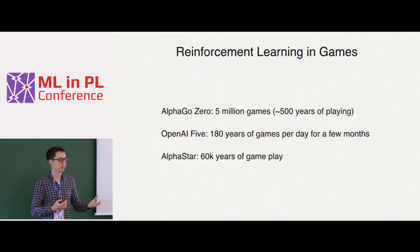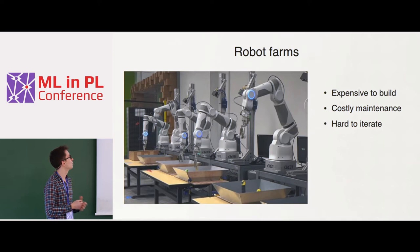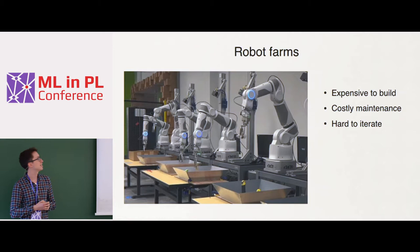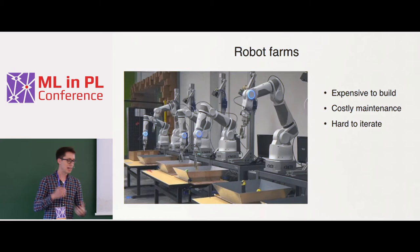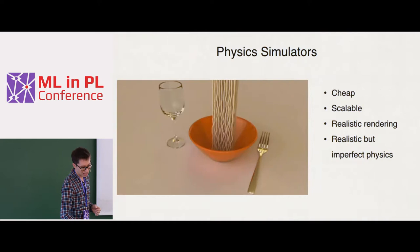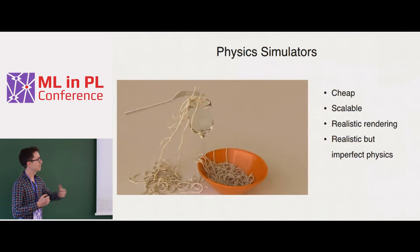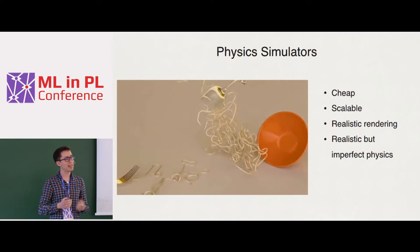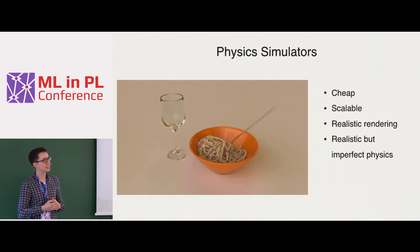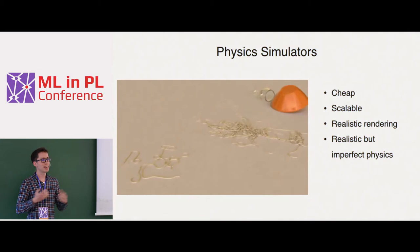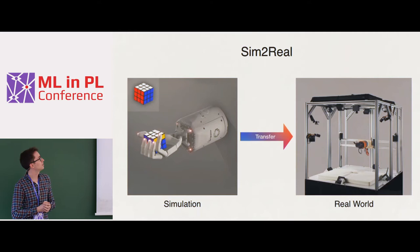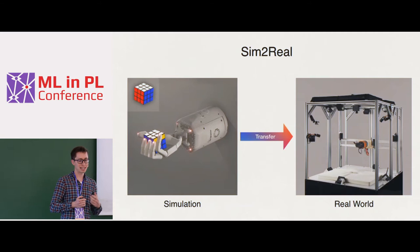Gathering this amount of experience on a physical robot would simply be infeasible. One potential solution is to parallelize data gathering using a farm of robots — as seen in work from Google Brain — but robot farms are expensive to build and maintain, and it's hard to iterate on new problems in that setup. An alternative is to train control policies in a physics simulator, which is much cheaper and more scalable. Nowadays we have realistic rendering, but physics simulators — often designed for the game industry — are based on different laws than real-world physics and are not very accurate. This approach of training in simulation and deploying in the real world is called Sim2Real, and that's the approach we took.